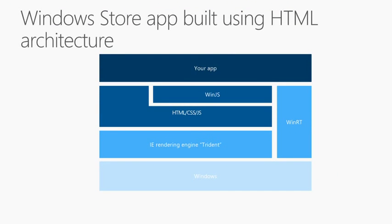A Windows Store application is built using HTML and on top you have your application. Then we have WinJS, the Windows JavaScript library. We have an HTML and CSS platform — that's a Trident layer. Along with this we've got WinRT, which is the shared API across all of our platforms. Everything available to WinRT for C# is available for WinRT in JavaScript. We use language projection to use all of those APIs. The HTML and CSS sits on top of the IE rendering engine — the Trident engine — and along with WinRT sits on top of Windows.